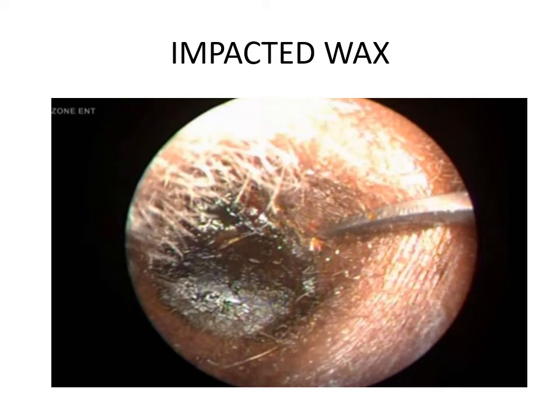Stiff hair and abnormalities in the external auditory canal, such as bony exostosis — which is a bony overgrowth narrowing the canal — cause accumulation of wax medial to the exostosis. This wax dries up and may get impacted. So the causes for impacted wax include excessive production, anatomical abnormalities of the external auditory canal, and oily skin due to excessive ceruminous gland activity.